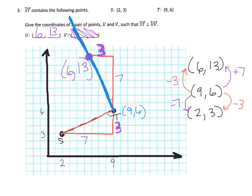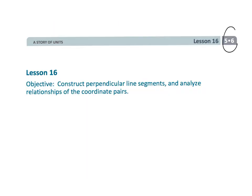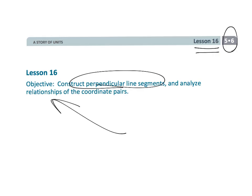That wraps up 5th grade Module 6 Lesson 16 — Constructing Perpendicular Line Segments and looking for patterns in coordinate pairs. Parents and teachers, keep in mind that with the exception of locating points on a grid, this content may be a little beyond the scope of the 5th grade Common Core Standards.